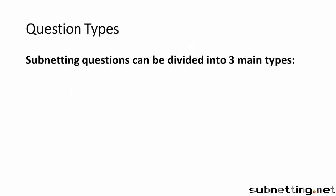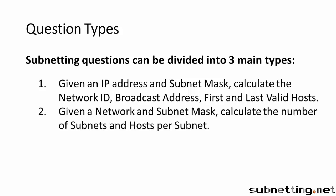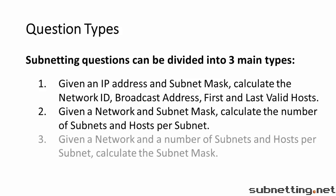Most subnetting questions can be divided into three main types. Type 1: given an IP address and subnet mask, calculate the network ID, broadcast address, and first and last valid hosts. Type 2: given a network and subnet mask, calculate the number of subnets and hosts per subnet. And Type 3: given a network and a number of subnets and hosts per subnet, calculate the subnet mask.